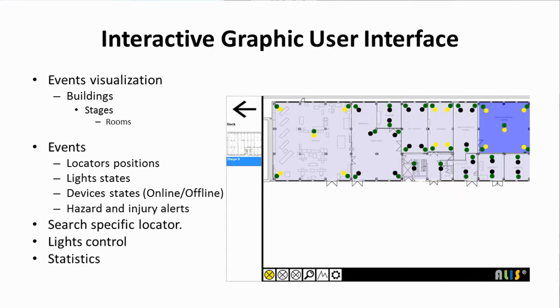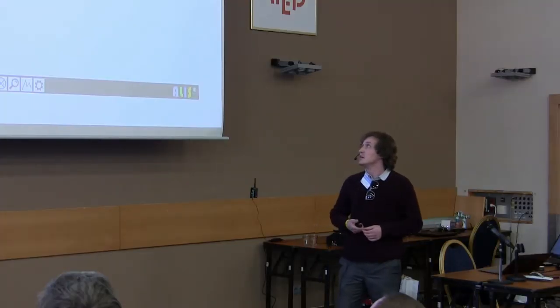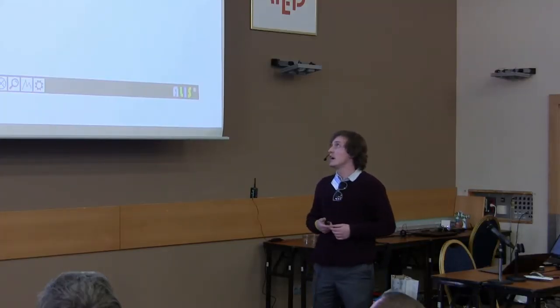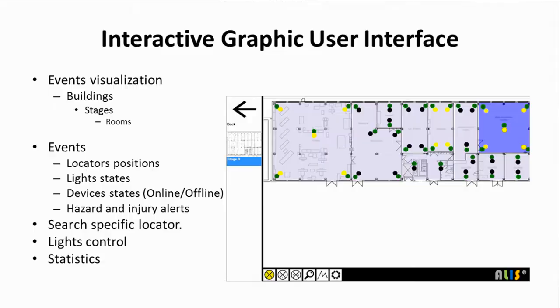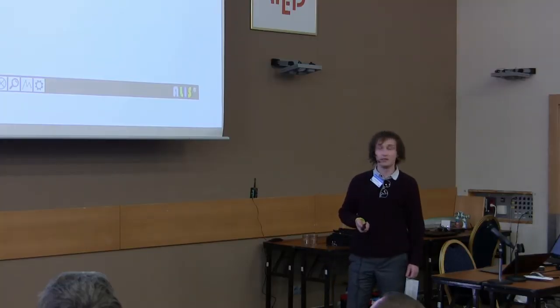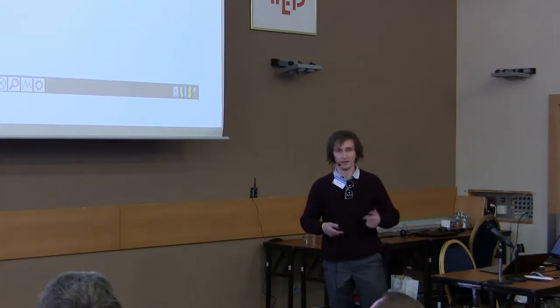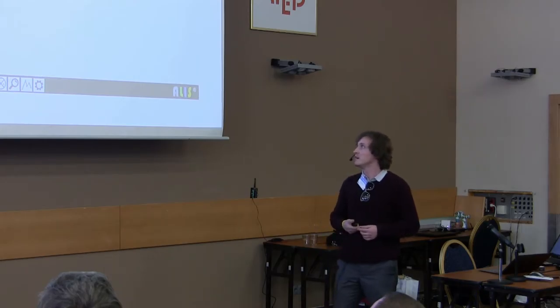The interactive graphic user interface, which is shown on the picture, visualizes events in the frame of buildings, stage, and rooms. The events can be locators position, light states, device states, if they are offline or online, hazard, and injury alerts.